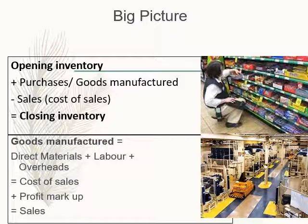In the manufacturing space, to calculate your goods manufactured, you start with your raw materials or direct materials, add your labor costs, add your overhead costs — that gives you your total cost of sales. If you add a profit markup, that gives you your sales figure. Always keep the bigger picture in mind: you need to be able to report those inventory movements and how the closing inventory number is made up in your financial statements.